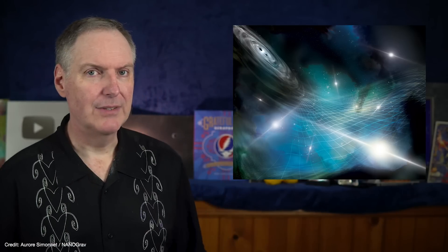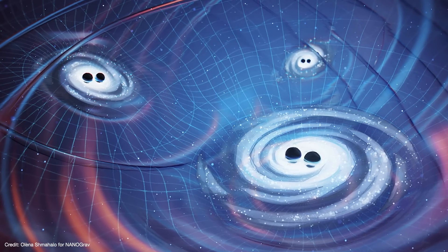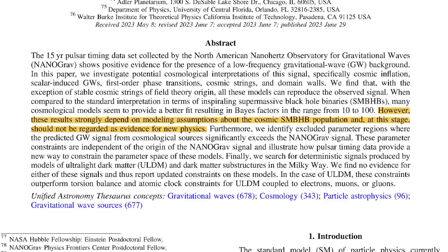So that clinches it. The gravitational wave background does include new physics, right? Well, no. No, not at all. Not really. The authors are very clear that all of the tests for new physics are based on many assumptions about supermassive black hole binaries that we honestly don't yet know are correct. They state very clearly that these results are strongly dependent on the modeling assumptions about the cosmic SMBHB population and at this stage should not be regarded as evidence for new physics.